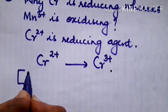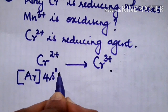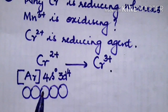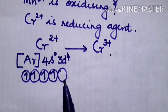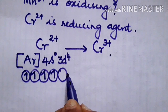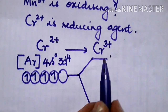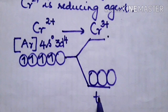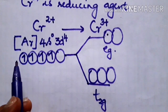The configuration of chromium is [Ar] 4s¹ 3d⁵. When it becomes Cr²⁺, it is [Ar] 4s⁰ 3d⁴. According to Hund's rule, the four electrons occupy the degenerate d orbitals. In aqueous solution, where water is a ligand, crystal field splitting occurs, forming two sets of orbitals — three lower energy t2g orbitals and two higher energy eg orbitals.